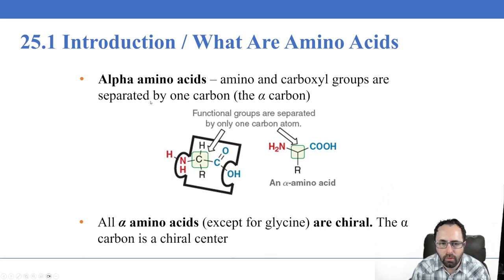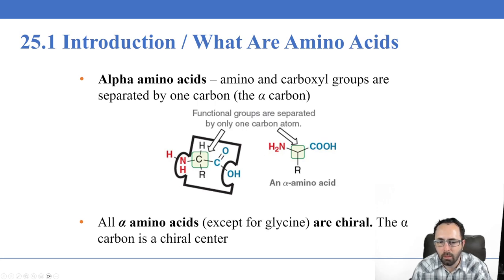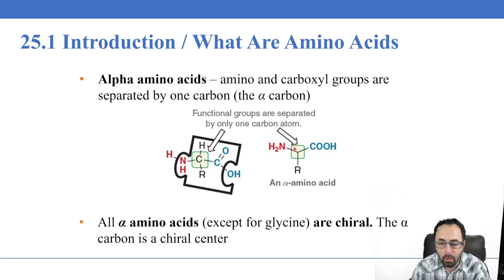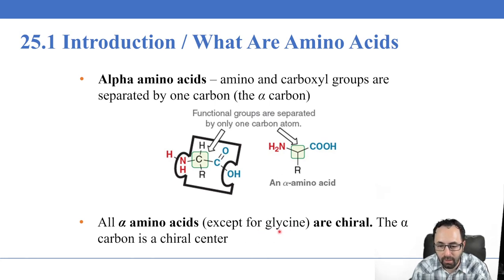These are referred to as alpha amino acids, with the alpha carbon being the one right next to the carbonyl group — also right next to the amine group. So it's the carbon right between these two functional groups. The amine and the carboxylic acid functional groups are separated by one carbon, the alpha carbon, and the amino acid side chain is also bonded to this alpha carbon. All alpha amino acids are going to be chiral — the alpha carbon is the chiral center — with one exception: glycine, for reasons we'll see in a moment.